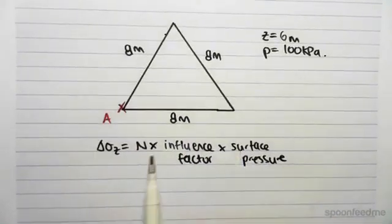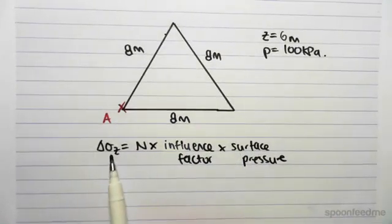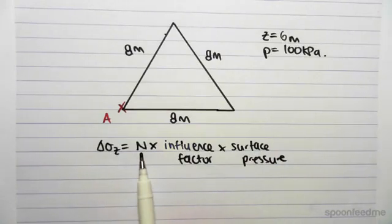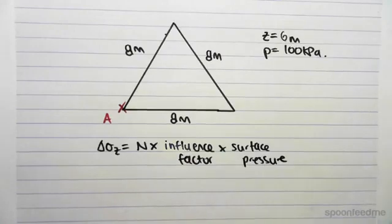So, the way we find this is using this formula that the change in stress is equal to N, which we're going to see what that is in a second, times the influence factor, which we're going to see in a second as well, times the surface pressure.